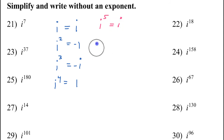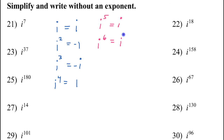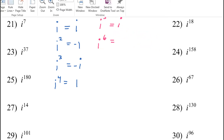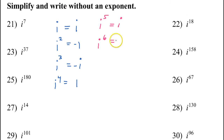That's interesting — that is the same result we got when we just had i to the first power. So i to the fifth power is just i. What do you think will happen with i to the sixth power? i to the sixth power is the same thing as i to the fourth power times i squared. That's 1 times negative 1, which is negative 1. So i to the sixth power is negative 1 — the same as i squared.